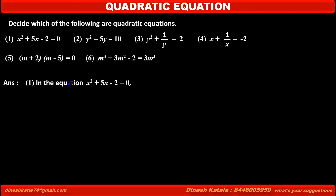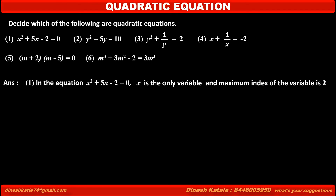Here, x is the only variable in this equation. The maximum index of the variable is 2, from the x squared term. In the second term, x has power 1, and in the third term, x has power 0. So the degree of this equation is 2, meaning the maximum index of the variable is 2. Therefore, it is a quadratic equation, because it has only one variable and its degree is 2.